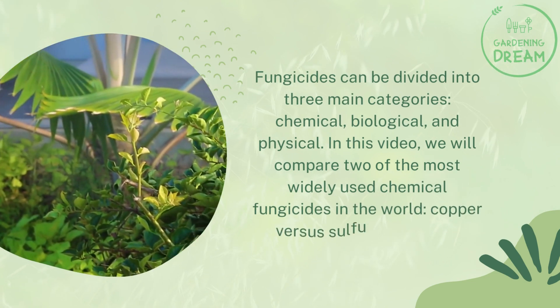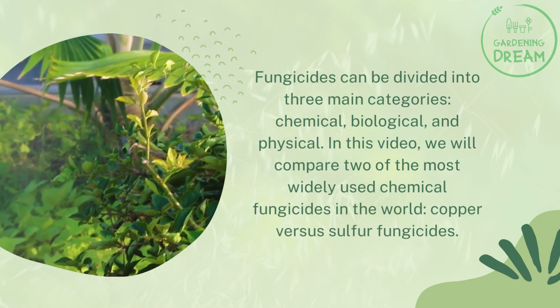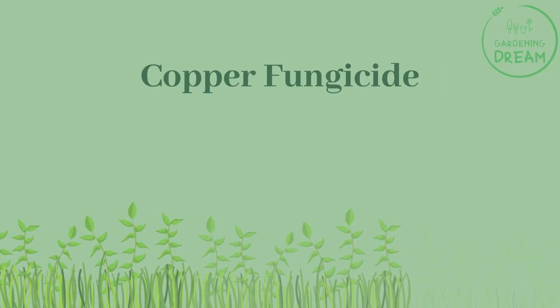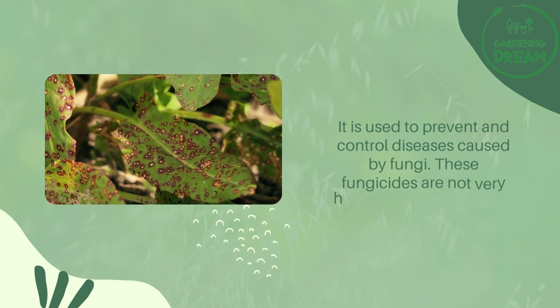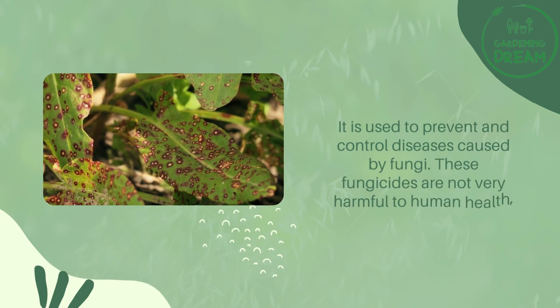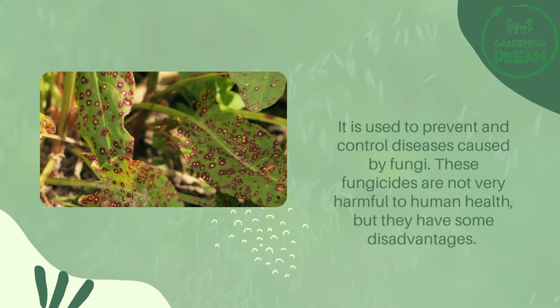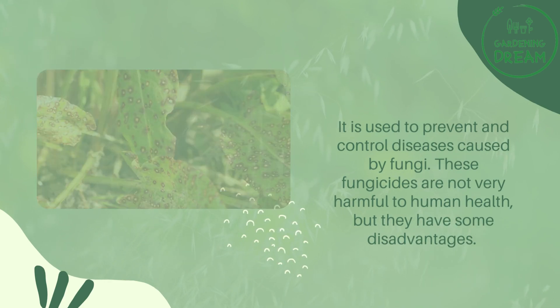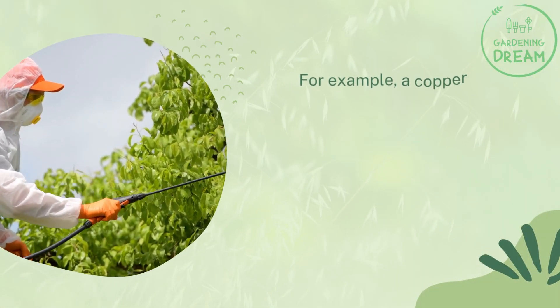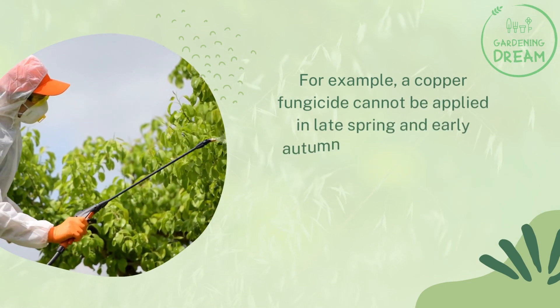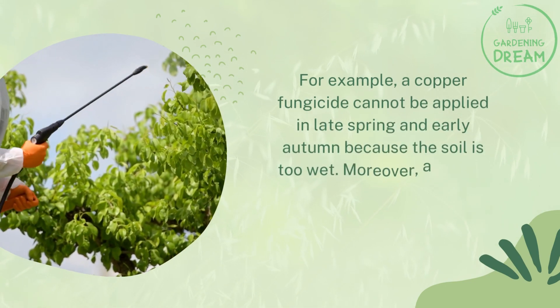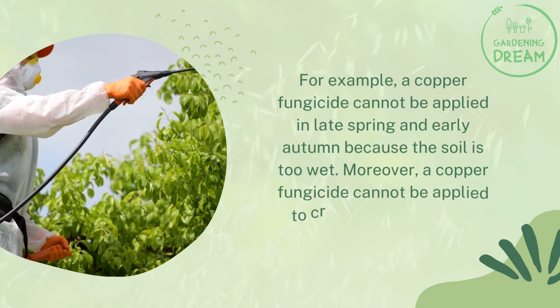Copper fungicide is used to prevent and control diseases caused by fungi. These fungicides are not very harmful to human health, but they have some disadvantages. For example, a copper fungicide cannot be applied in late spring and early autumn because the soil is too wet.